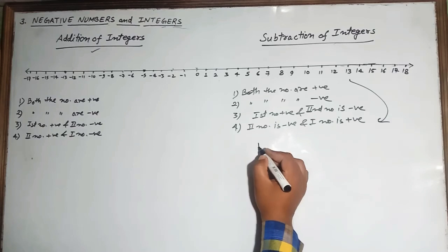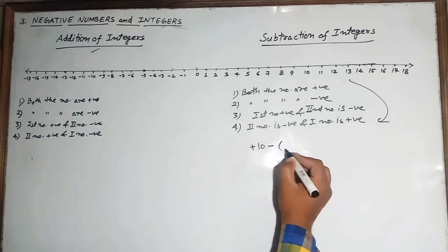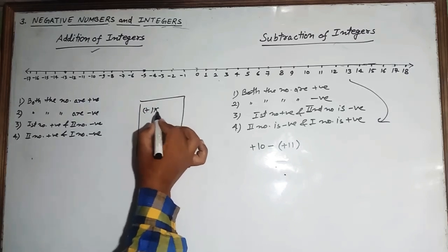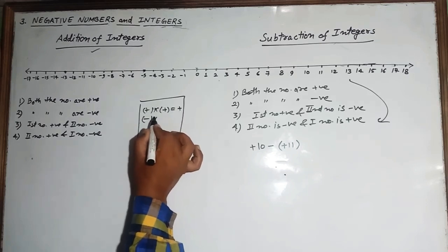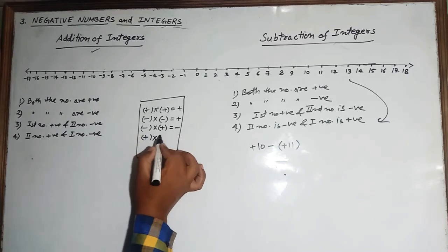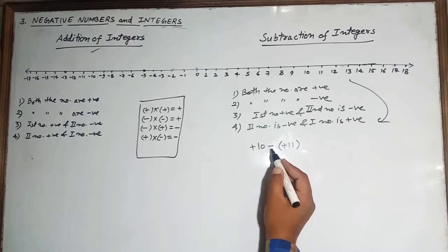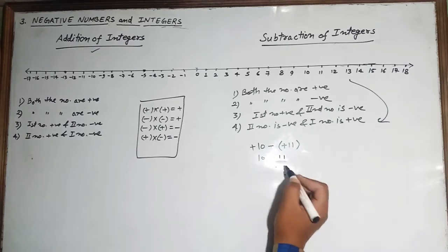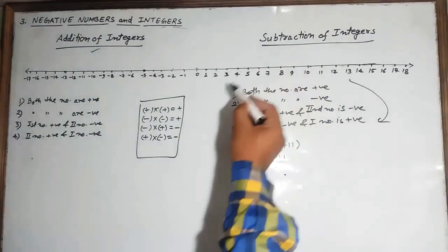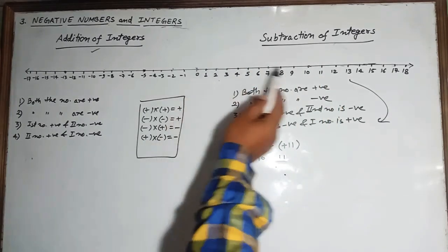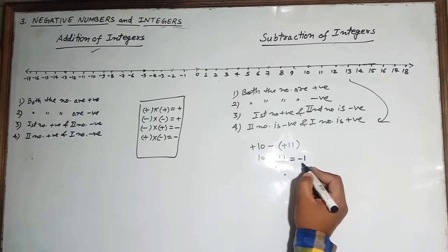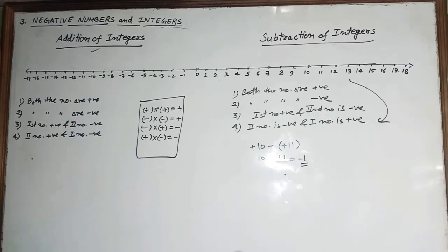Case 1 — both positive: for example, plus 10 minus plus 11. Applying sign rules, minus into plus gives minus, so it becomes 10 minus 11. On the number line, 10 is here, and we move 11 steps to the left — 1 through 11 — giving us minus 1 as the answer.